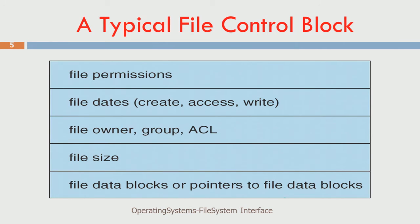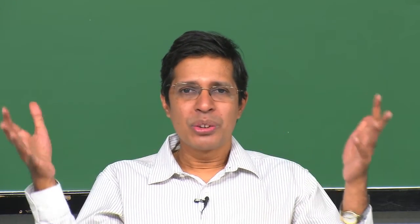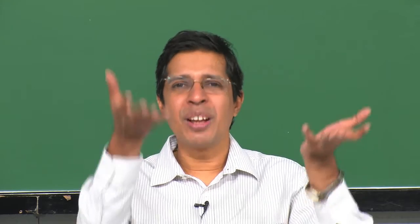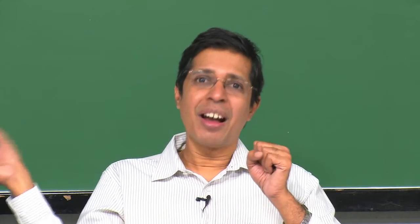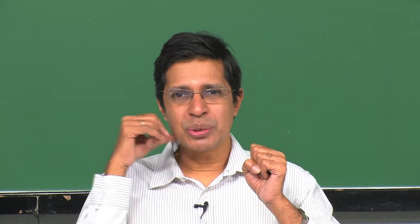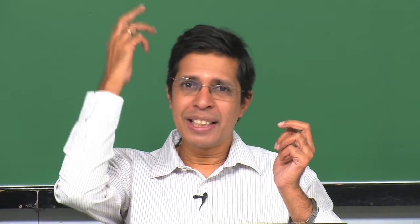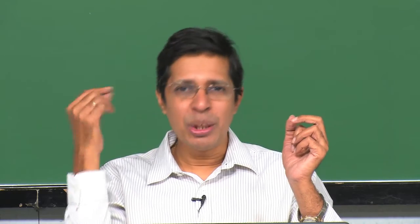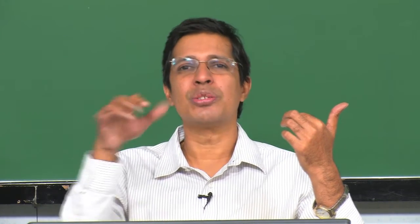Just like a person has attributes - name, initials, age, gender - a file also has attributes. After that, the data of the file should be stored, so the file control block will also have pointers to where the data is stored. The typical file control block in the UNIX environment is called an inode, or identification node. It has all these details about the file and pointers to where the data of those files are stored.